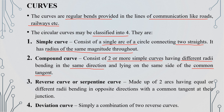The next one is the reverse curve, also called the serpentine curve. The deviation curve is a combination of curves used in road and railway alignment.